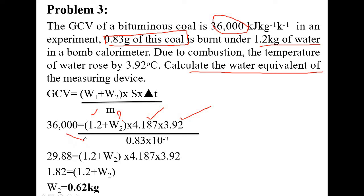Upon solving, 0.83 into 10 to the power minus 3 goes to the left hand side and gets multiplied, then you get 29.88. Then 1.2 plus W2 into this. In the next step 29.88 gets divided by 4.187 into 3.92, then it becomes 1.82. Then W2 equals 0.62 kg. This is the water equivalent of the calorimeter.